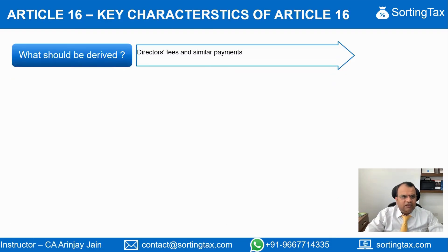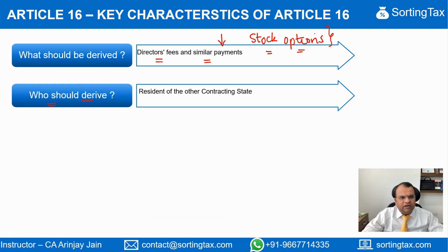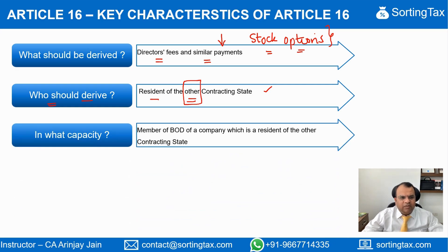Let's look at some key characteristics of Article 16. First, what should be derived by the non-resident: either director fees or similar payments, which can even include stock options given to directors for acting in their capacity as a member of the board of directors. If a stock option is issued in some other capacity, it is not taxed under Article 16. Second, who should derive these fees: the person must be a resident of the other contracting state. Third, in what capacity: his capacity must be that of a member of the board of directors of a company which is a resident of the other contracting state — in other words, the state of source.